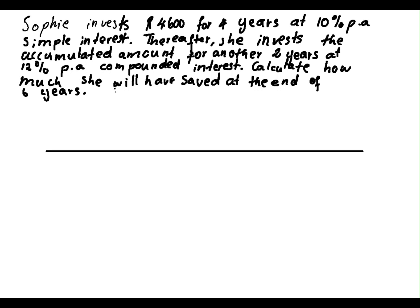In the first question, they are saying Sophie invests 4,600 rands for 4 years at 10% per annum simple interest. Thereafter, she invests the accumulated amount for another 2 years at 12% per annum compounded interest. Calculate how much she will have saved at the end of 6 years.